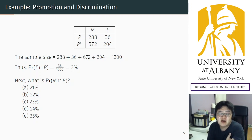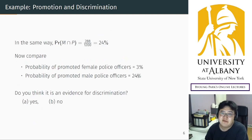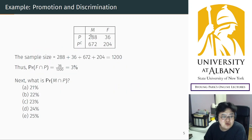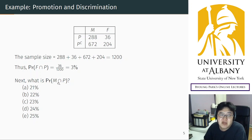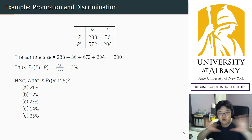Now calculate the probability of M intersection P — male and promoted. It's pretty much the same. Since you already calculated the sample size of 1200, you just need the count: 288 police officers are male and promoted. So the probability of M intersection P is 288/1200, which is 24%. You have to connect notation, the definition of probability, and the calculation — all three together.